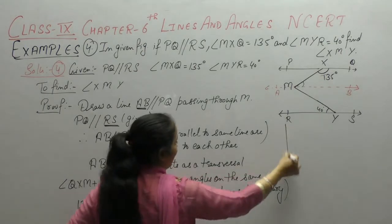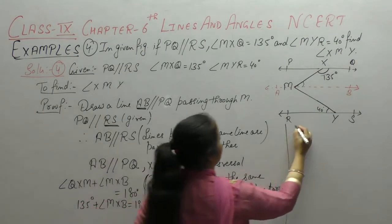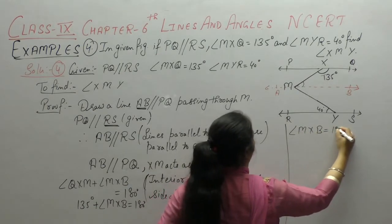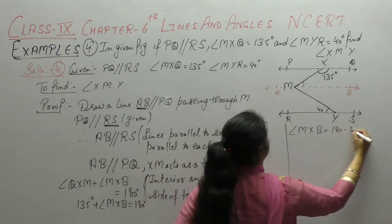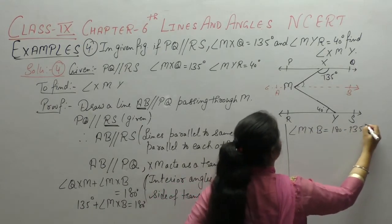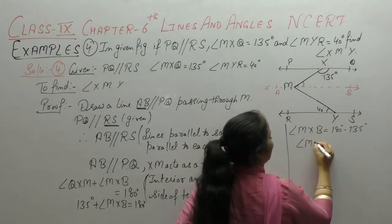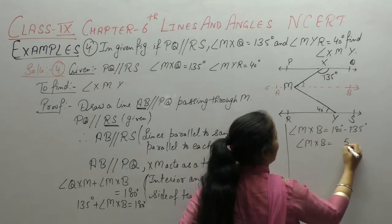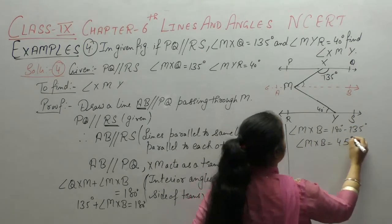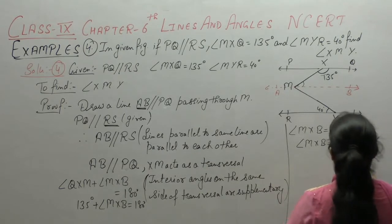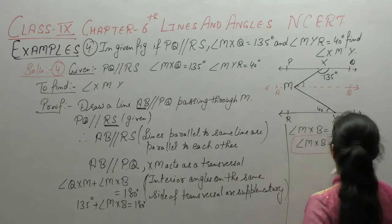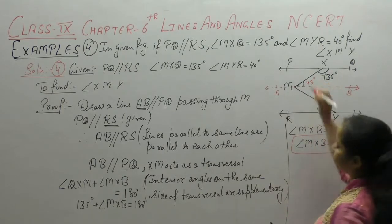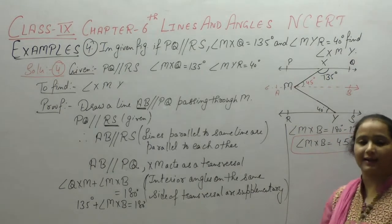From this, angle MXB = 180° − 135° = 45 degrees. So angle MXB comes out to be 45 degrees.